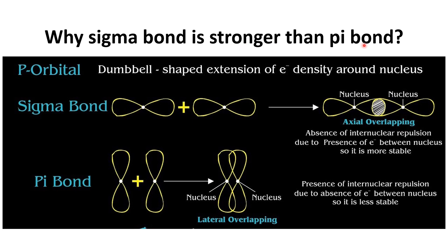The sigma bond is stronger than the pi bond. Both sigma and pi bonds can be found in the overlapping of p orbitals. In axial overlapping, there is a region between the two nuclei where electrons are present, resulting in less internuclear repulsion, making it more stable. In the pi bond, there is sideways overlapping, so the nuclei are very close together, causing more internuclear repulsion, making it less stable. This is the reason sigma bonds are stronger.